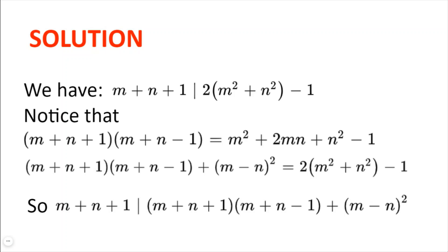And so 2 multiplied by m squared plus n squared minus 1 is equal to m plus n plus 1 multiplied by m plus n minus 1, plus m minus n squared. So we have that m plus n plus 1 divides m plus n plus 1 multiplied by m plus n minus 1, plus m minus n squared.